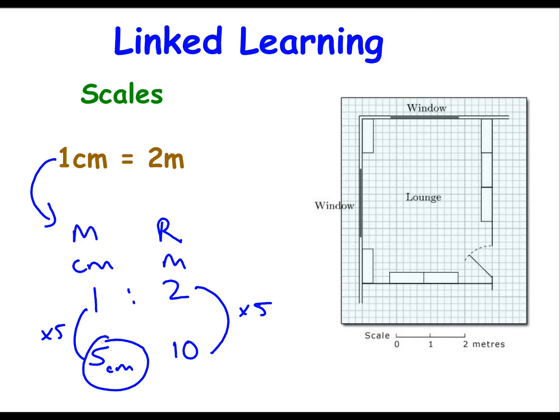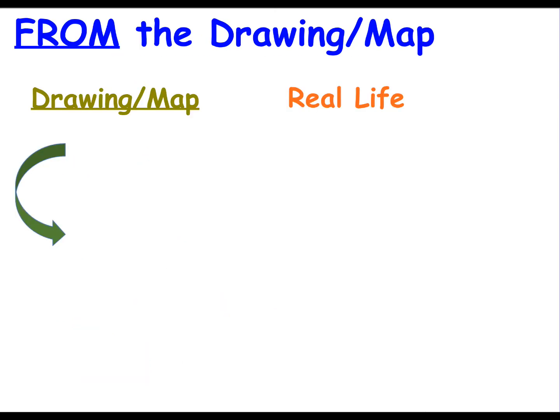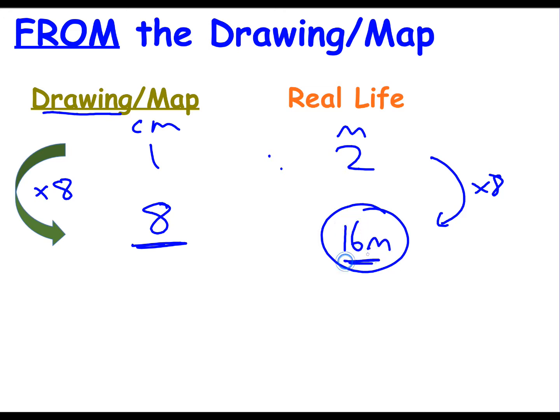This also works going the other way which is taking things off the drawing. So let's have a look at taking things from the drawing or the map first. Whatever our scale is, whether it's centimeters to meters, 1 to 2, what we're going to concentrate on is taking a reading from the drawing or the map and put the value on this side of our ratio to work out what the real life value is. So if we measure a line on our map as 8 centimeters, then we've multiplied it by 8. We do the same on this side and we end up with 16 meters in the real world.